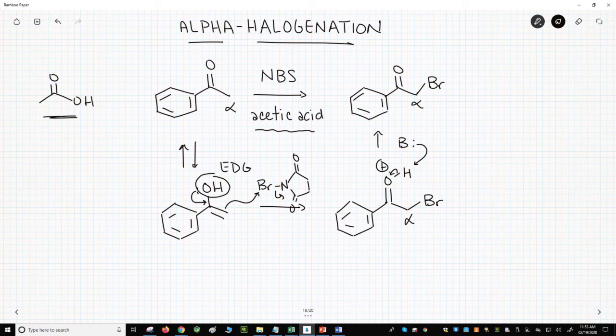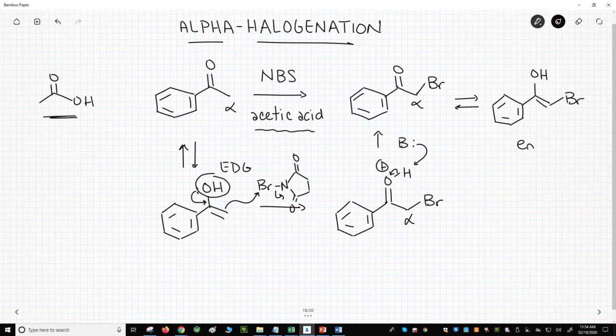Now you might wonder why you don't get multiple halogens on the alpha carbon. The brominated product should be able to form an enol again. In fact, it does. This is the enol form of the product.